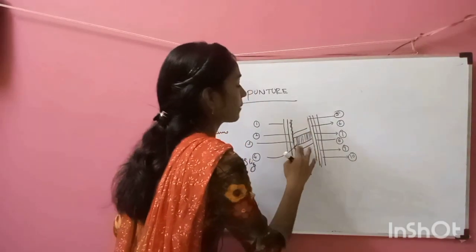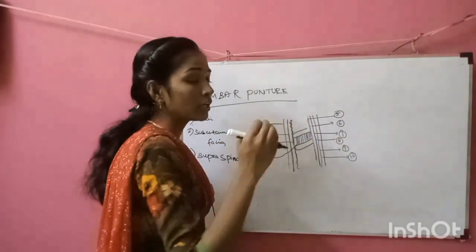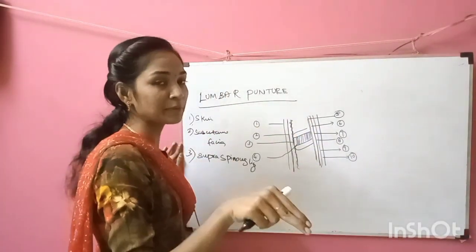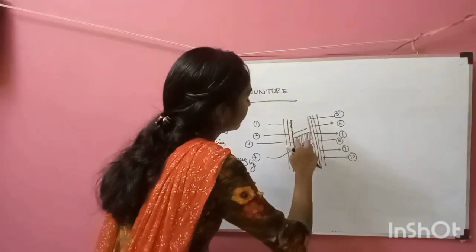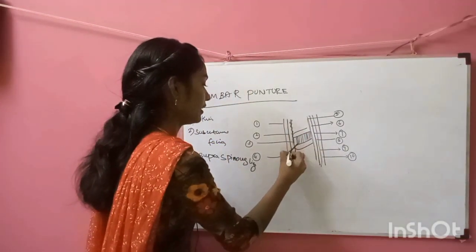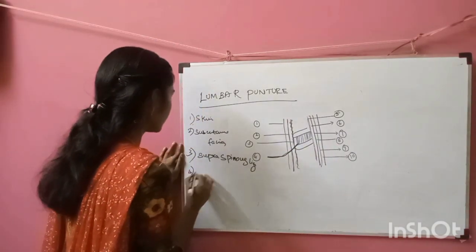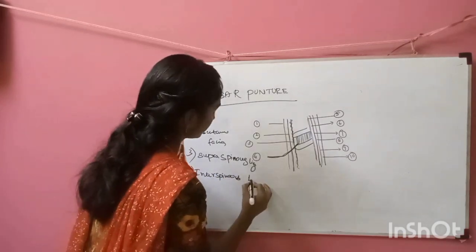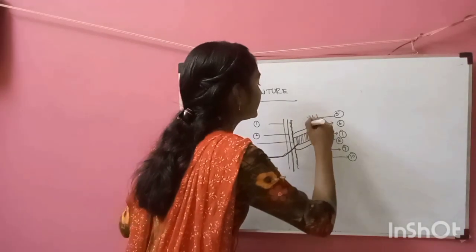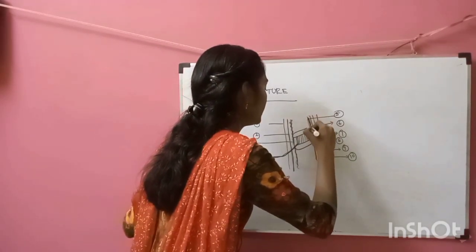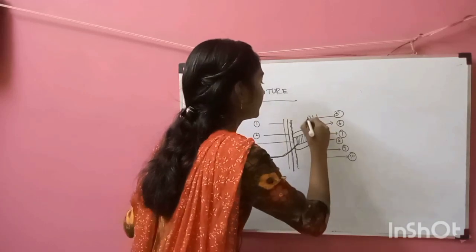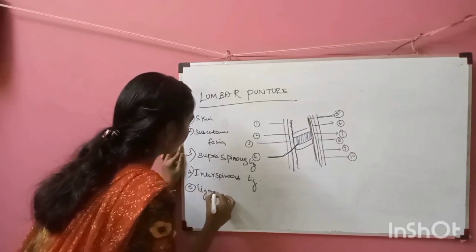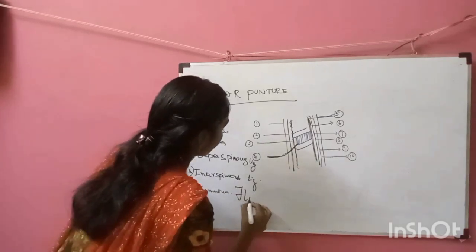The fourth layer is the interspinous ligament — the ligament present in between two spinous processes. The fifth layer is the ligamentum flavum, which lies after the interspinous ligament.